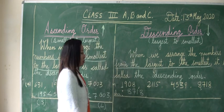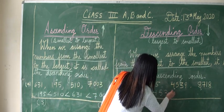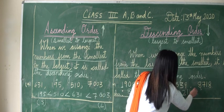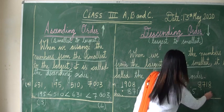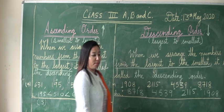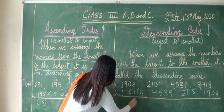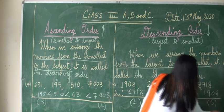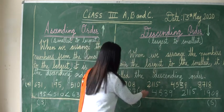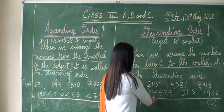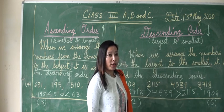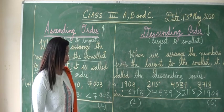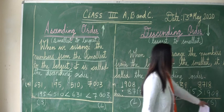Now compare these three remaining numbers. Among them, 4539 is the largest. Comparing the last two, 1908 is the smallest number. So 8718 is the largest and 1908 is the smallest. We can read: 8718 is greater than 4539, 4539 is greater than 2115, and 2115 is greater than 1908. These numbers are in descending order.